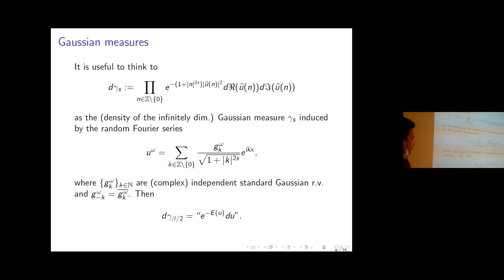The coefficients satisfy the right covariance to match the Gaussian density. We define the Gaussian measure gamma_s with a free parameter s, and to build our specific invariant measure we need to choose s equal to beta/2.